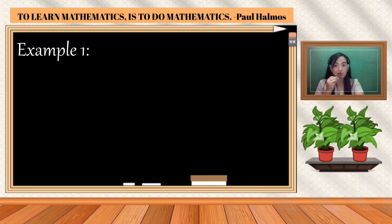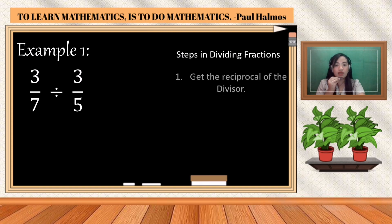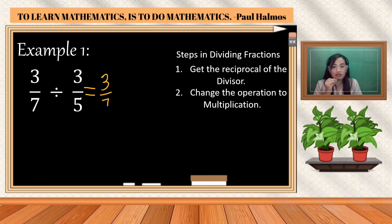Example number one: three-sevenths divided by three-fifths. I will show you first the long method. Steps in dividing fractions: step one, get the reciprocal of the divisor; step two, change the operation to multiplication. So we copy three over seven as our dividend, change the operation to multiplication, and get the reciprocal of three-fifths, which is five over three.